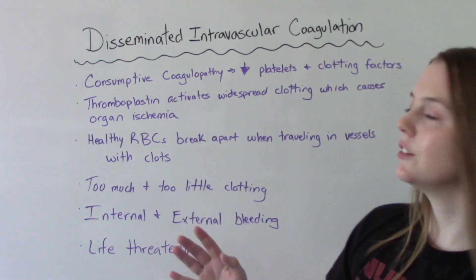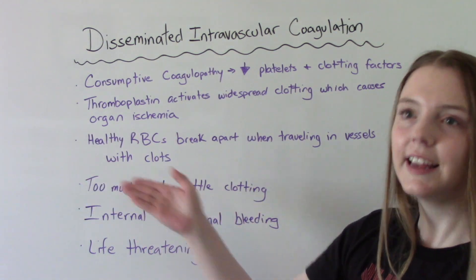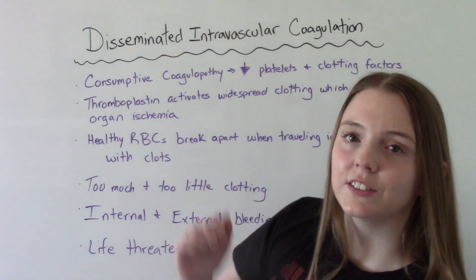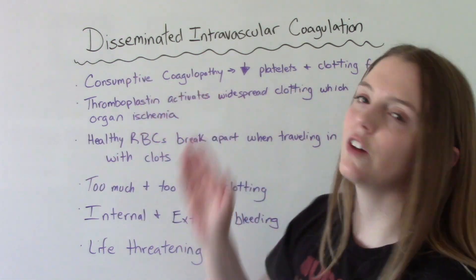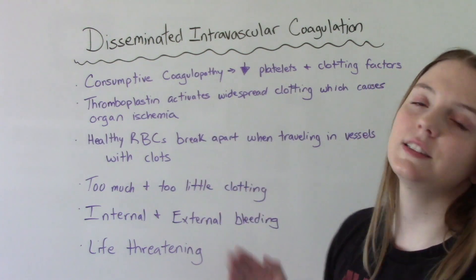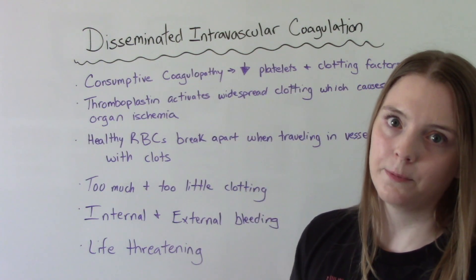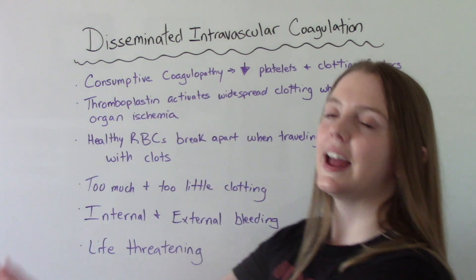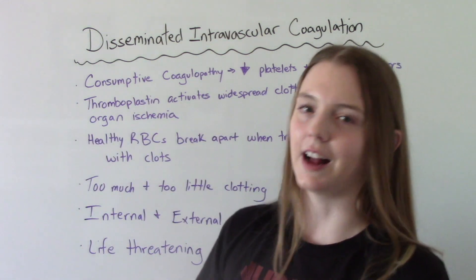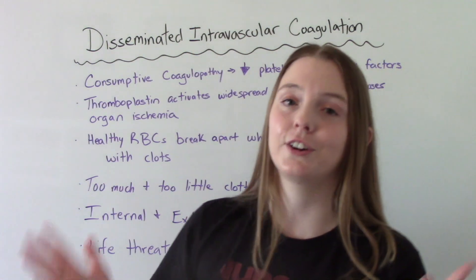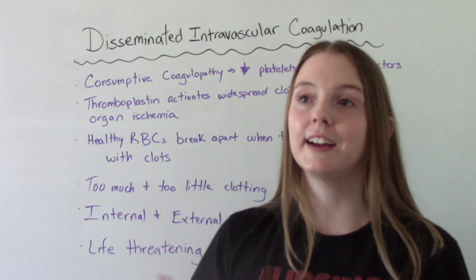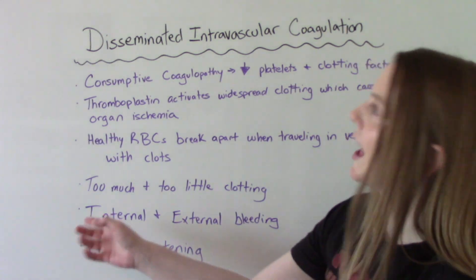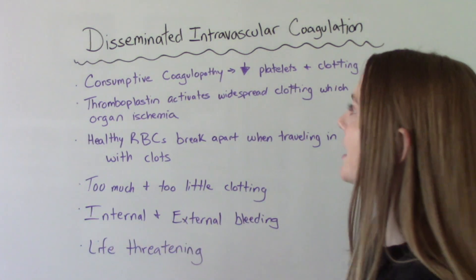Our healthy red blood cells get caught in the middle of this — they're just making their way through the blood vessel normally, but now the blood vessel is full of blood clots, causing them to break down as well. So at the same time, we have too much clotting and not enough clotting going on. They're kind of opposites occurring simultaneously, and as you can imagine, that's very dangerous. This is a life-threatening condition that causes both internal and external bleeding.